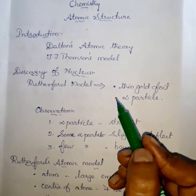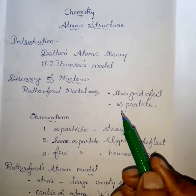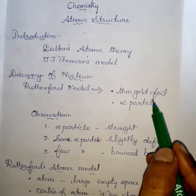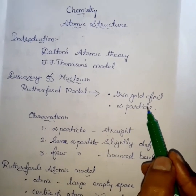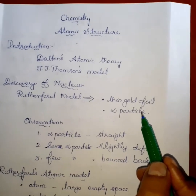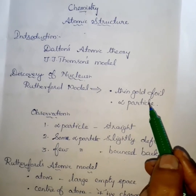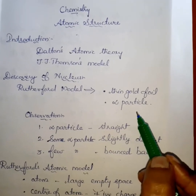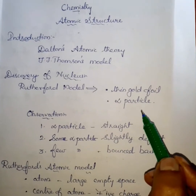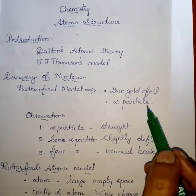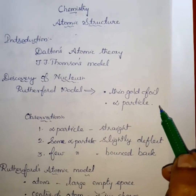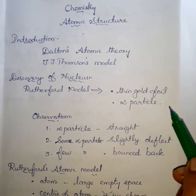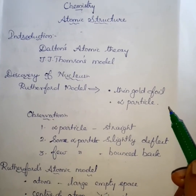Rutherford discovered the nucleus by his famous Gold Foil Experiment. The nucleus is the center part of the atom and it is the combination of proton and neutron. He selected a gold foil and alpha particle. The alpha particle is fired through a thin part of gold foil. Why are we using gold? Gold is a malleable metal — meaning the metal can be converted into a thin sheet form.